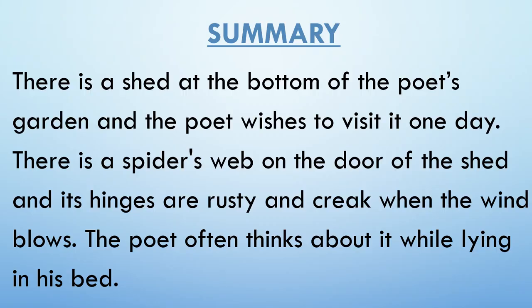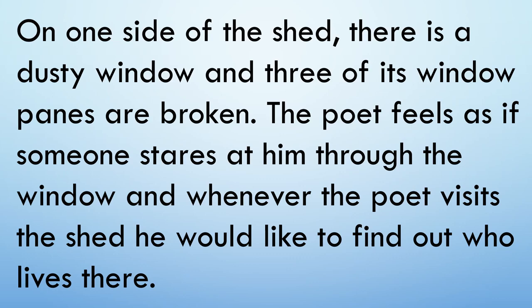The summary of the poem: there is a shed at the bottom of the poet's garden and the poet wishes to visit it one day. There is a spider's web on the door and its hinges are rusty and creak when the wind blows. The poet often thinks about it while lying in his bed. On one side there is a dusty window with three broken panes, and the poet feels as if someone stares at him through the window.